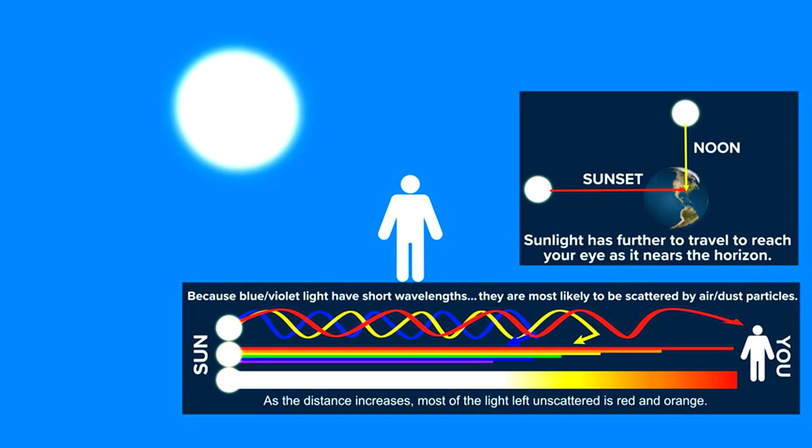As the distance increases, most of the light left unscattered is red and orange. So next time you see the sun or moon really low on the horizon with that orangish and reddish color, you'll be able to explain to your friends why it is that way.